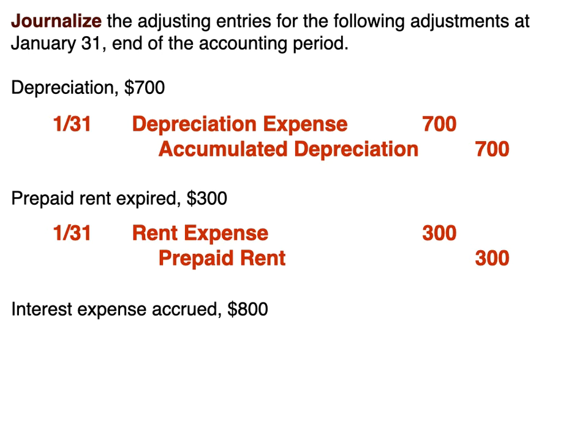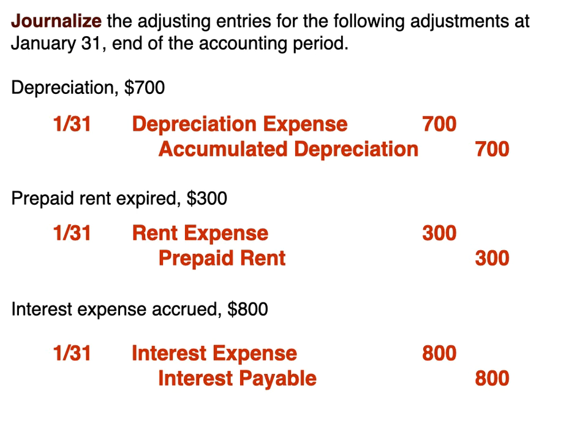The third one is interest expense has been accrued of $800. This means that we have incurred interest expense but have not yet paid it — it's accrued, it's gotten larger because we haven't paid it yet. So interest expense is increasing; expenses increase with debits. Since we have not paid it, we have incurred a liability: interest payable. So we debit interest expense for $800 and credit interest payable for $800.